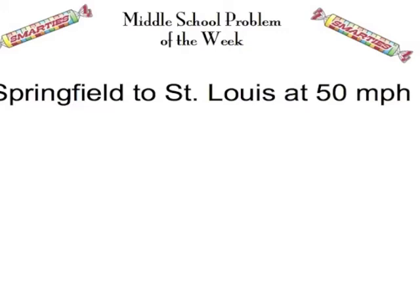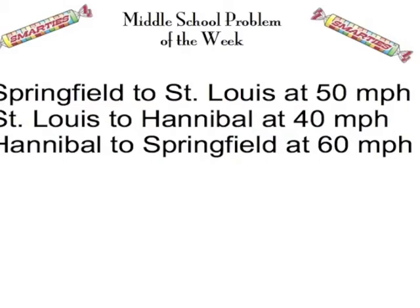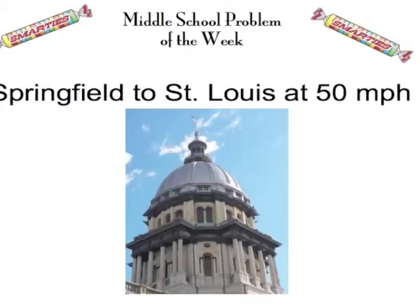We've made up a problem where we've gone from Springfield to St. Louis at 50 miles per hour, St. Louis to Hannibal at 40 miles per hour, and Hannibal to Springfield at 60 miles per hour, and we're trying to find the average speed.